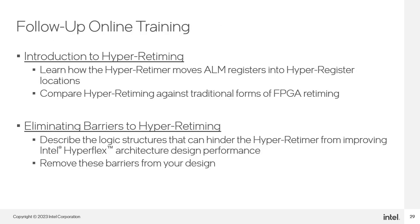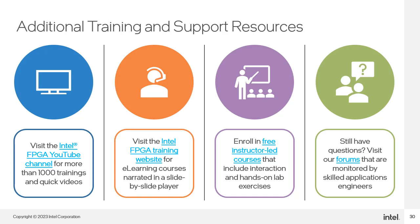If you would like to continue in your learning, you can view the follow-up free online training shown here. The Introduction to HyperRetiming course talks about how HyperRetiming actually works and why it is able to provide such large performance gains. The Eliminating Barriers to HyperRetiming course then talks about the logic structures in your design that prevent HyperRetiming and some alternative solutions to them. Intel provides multiple avenues to learn about Intel FPGA products: the Intel FPGA YouTube channel with short and in-depth training videos, the Intel FPGA training website with e-learning courses featuring narrated slides and interactive players, and live instructor-led courses presented in person or virtually over the web — all with hands-on lab exercises.